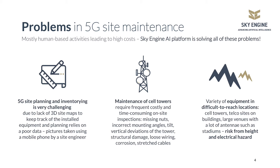Pictures are taken using a mobile phone by a site engineer. Maintenance of cell towers requires frequent, costly, and time-consuming on-site inspections — missing nuts, incorrect mounting angles, tilt, vertical deviations of the tower, structural damage, loose wiring, corrosion, or stretched cables. A variety of equipment is placed in difficult-to-reach locations.